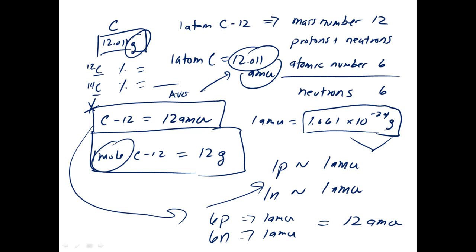Alright, so what I want you to get out of this PowerPoint presentation is that one atom of carbon-12, the isotope of carbon that has a mass number of 12, weighs exactly 12 atomic mass units. One mole of carbon-12, which means we have Avogadro's number, which will be coming up in the next lesson, weighs exactly 12 grams.